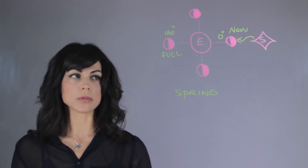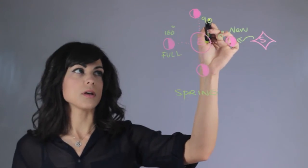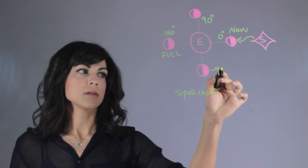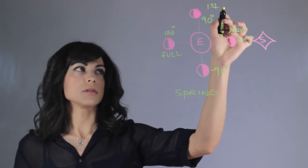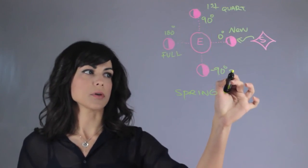Now what happens at quarter moons? So when we look at when the moon is in this position at 90 degrees, here we have the first quarter, and here we have the third quarter.